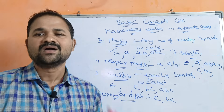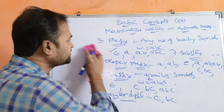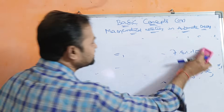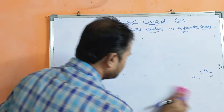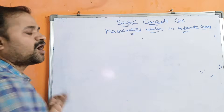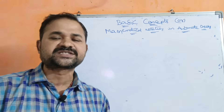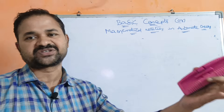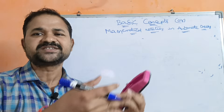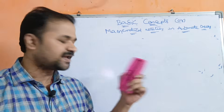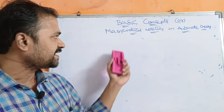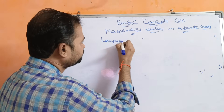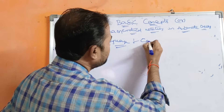Till now we have seen alphabet and string. Now let us see the next terminology: language. Language means a collection of strings. To summarize: alphabet means a collection of symbols; string means a collection of symbols from the alphabet; and language means a collection of strings.